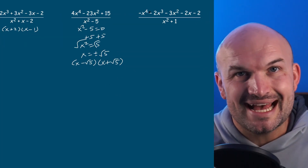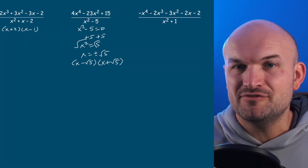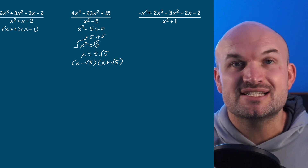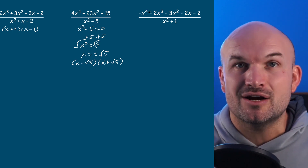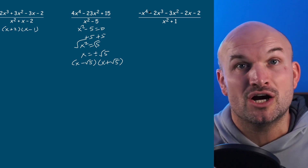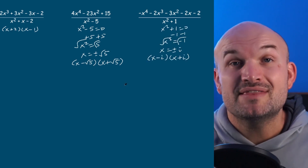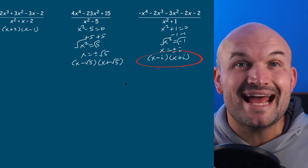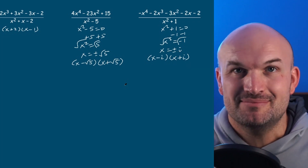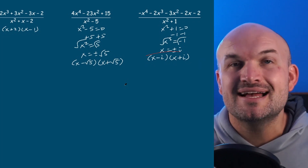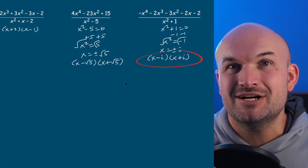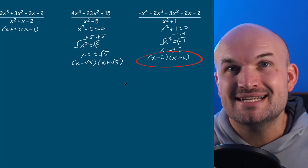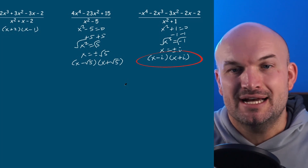For this last example, it can be a little confusing because I can't factor x squared plus one. To get around this, we set it equal to zero and solve to find our zeros. In this case, we cannot take the square root of a negative number, so we're going to enter our imaginary number system — and make sure you include that plus or minus. Therefore, when we have the zeros plus or minus i, our factors will be x minus i times x plus i.